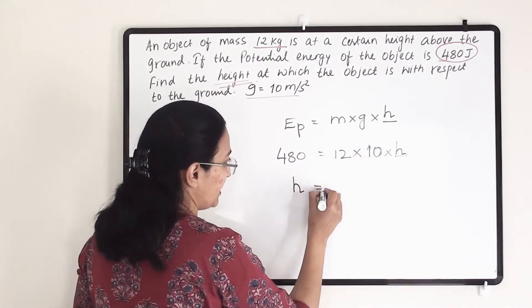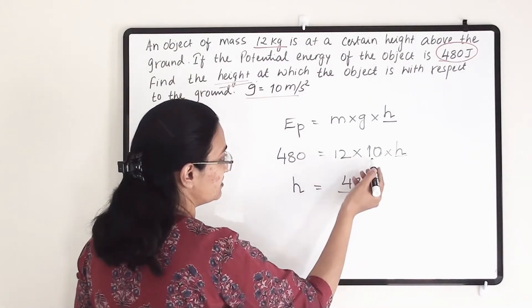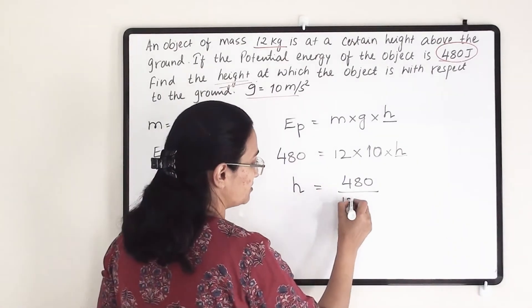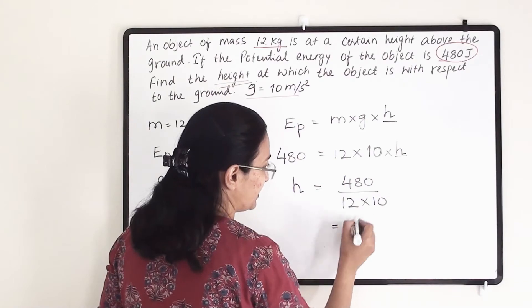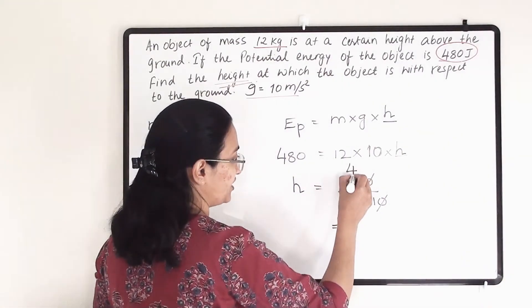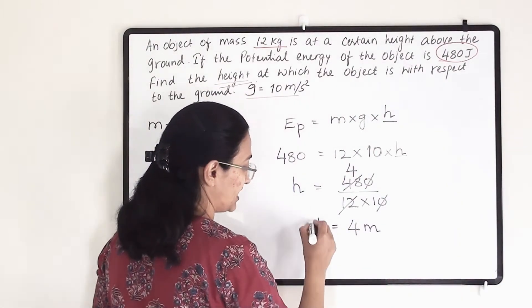So H equals to 480, and we are taking both of these terms towards the other side. It will go to denominator. So 12 into 10. So here we will get 4, and this is 4 meter because this is height.